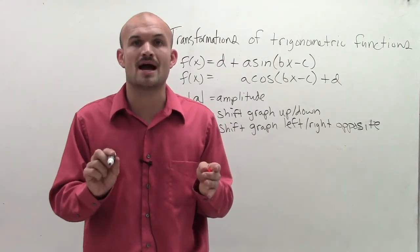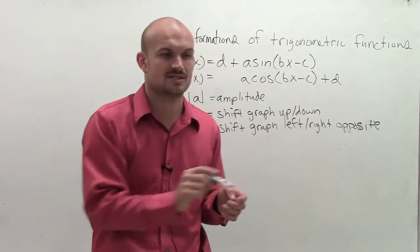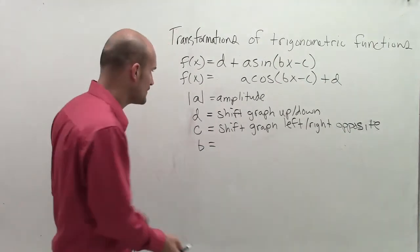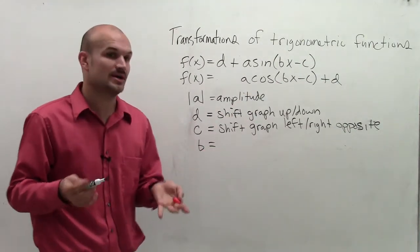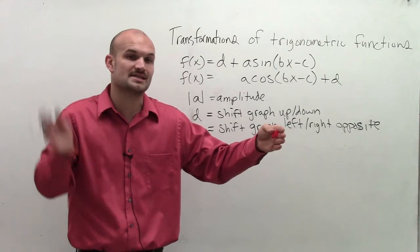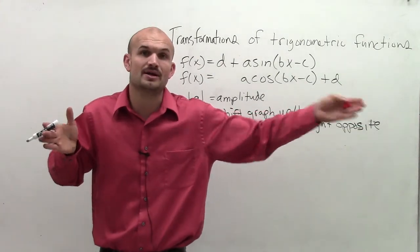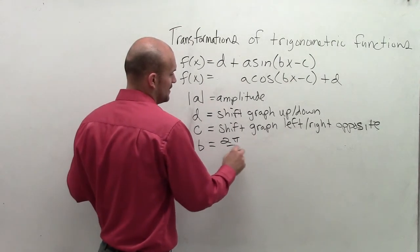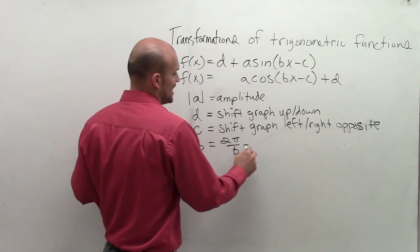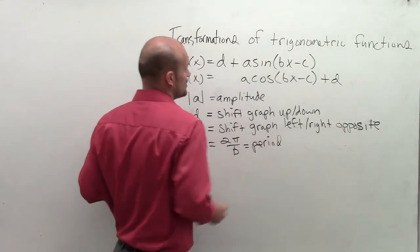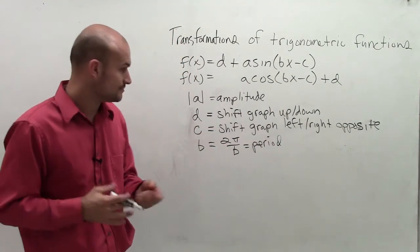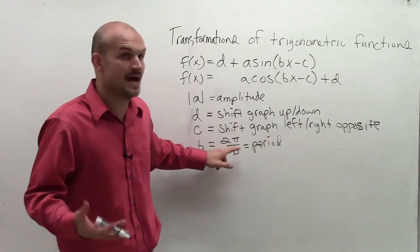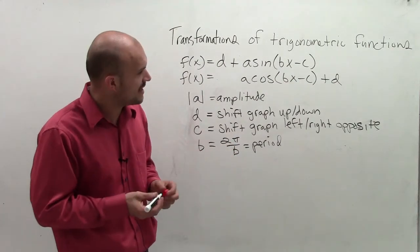If you remember our graphs, they're cyclical, right? They keep on repeating each other. Well, once a graph goes through one cycle, we call that a period. And so b is going to affect our period. It's either going to make that period - how long it takes it to go through one cycle - it's either going to elongate that period or shorten that period. So b, when we do 2π divided by b, that's going to equal our period. So b is going to have an effect on our period, depending on when you take 2π, which is the parent graph period, and then divide it by b.